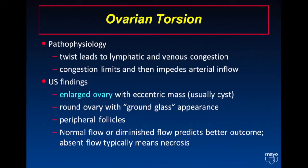With ovarian torsion, the pathophysiology is such that there's a twist of the adnexa, and specifically the ovary around a pedicle, leading to lymphatic and venous congestion. That congestion then results in a limitation and an impediment of arterial inflow.